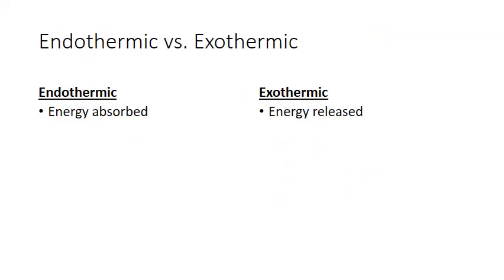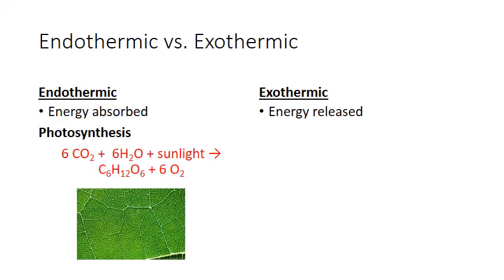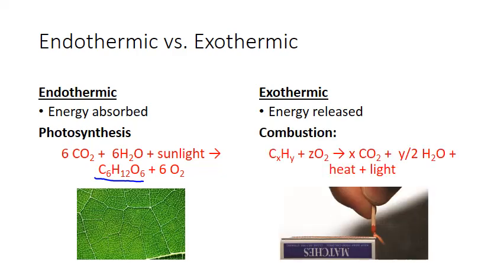We can also talk about chemical reactions as endothermic or exothermic. An endothermic chemical reaction is one in which energy is absorbed, such as the formation of simple sugars through the process of photosynthesis. Light energy is actually stored within the chemical bonds of the glucose molecules that are formed. That energy in chemical bonds can be released in exothermic processes. A great example of an exothermic process is combustion, in which a hydrocarbon fuel is reacted with oxygen to form carbon dioxide and water, and to release heat and light.